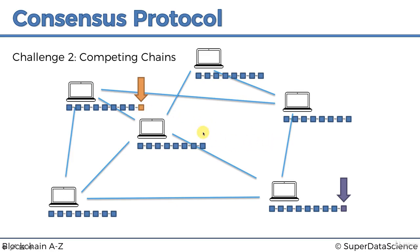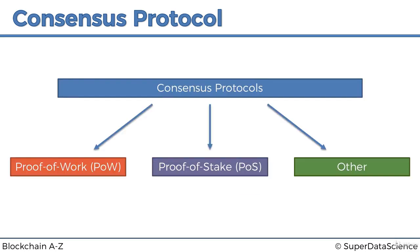If a consensus protocol is not in place, you'll have conflicting chains that split into two, then four, then eight, and eventually you just have a ton of completely separate blockchains — which we don't want. We want an integral blockchain. There are multiple different types of consensus protocols, and at the end of this tutorial I'll recommend an article highlighting several of them.